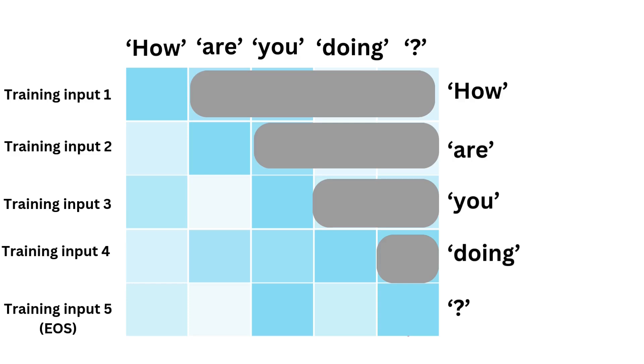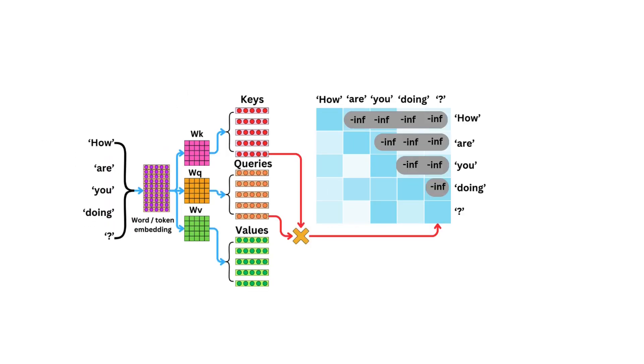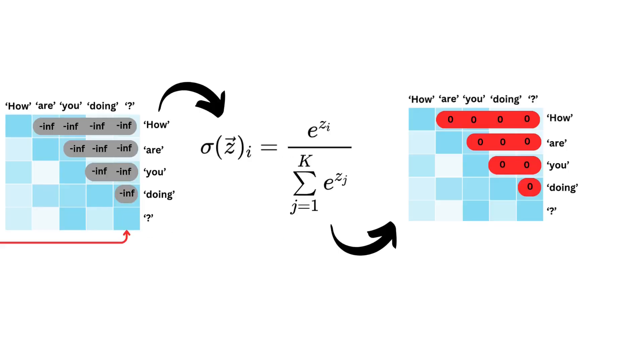The most cost-efficient way to set up this masking is to apply the mask just before the softmax. When added to the attention matrix, it will bring specific values to large negative numbers. When the softmax is applied, it will lead these elements to become zero, making the model not pay attention to these positions during training. Masked self-attention is crucial for autoregressive language modeling because it creates causality and forces the model to generate text one token at a time, conditioning each prediction only on the preceding context.